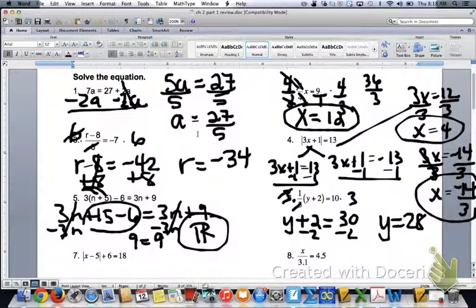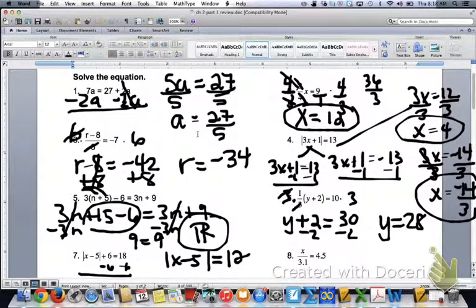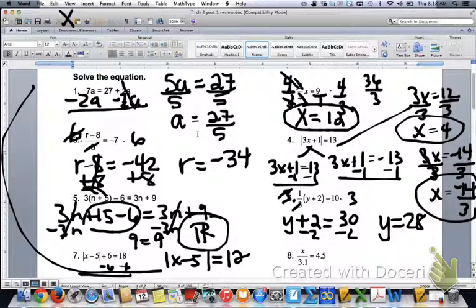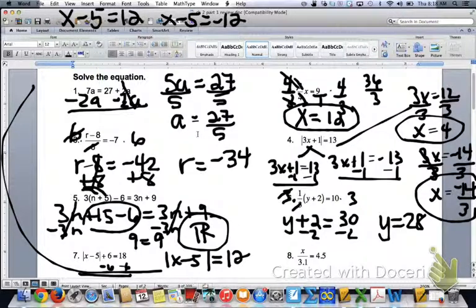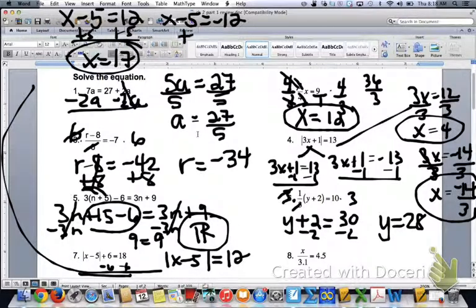And the next one, the first thing you need to do, I know it's an absolute value, but the absolute value is not by itself. So we need to minus the 6 first. Then you have the absolute value of x minus 5 equals 12. From there, you can split it. I'm going to move it up here. So you have x minus 5 equals 12. And x minus 5 equals negative 12. When you add 5, you get 17. And add 5 here, you get x equals negative 7. Those are your two answers.